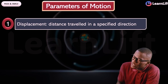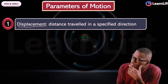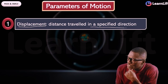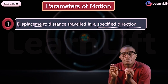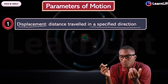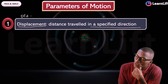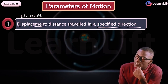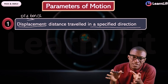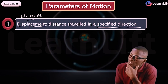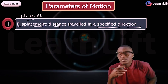Displacement is the distance traveled by a body in a specified direction. Distance does not have direction, while displacement has direction — that is why displacement is the distance traveled in a specified direction.